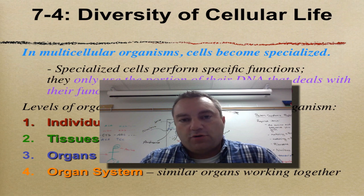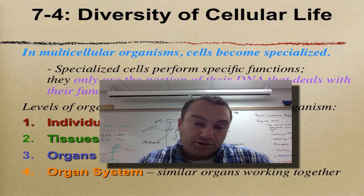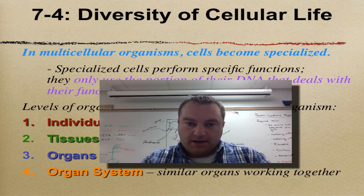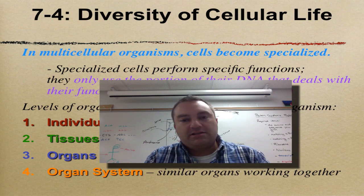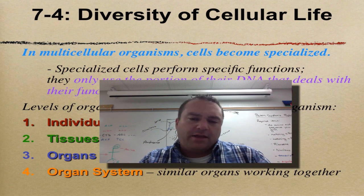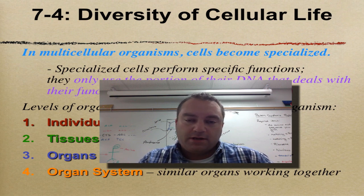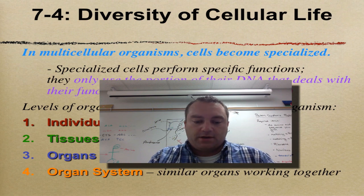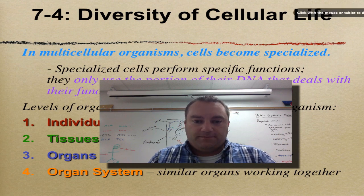Welcome to our final episode from chapter seven. In this episode we're going to cover two concepts: number one, differential gene expression — basically what that is is how does a skin cell become a skin cell and not a muscle cell in a multicellular organism like yourself. We're also going to talk about the level of organization in multicellular creatures: cells, tissues, organs, organ systems, etc.